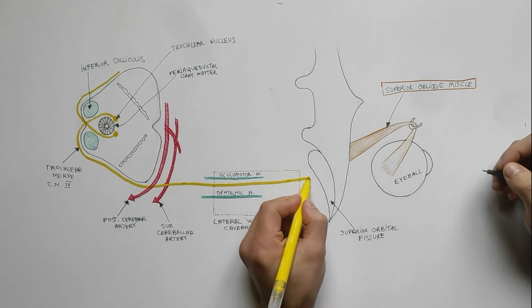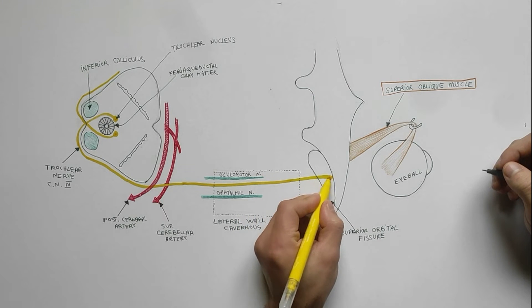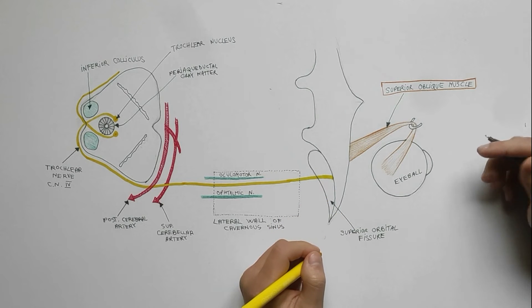It leaves the cavernous sinus and enters the orbit through the superior orbital fissure, above the tendinous ring.